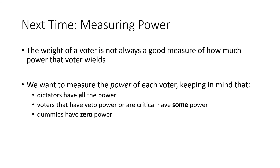As we've seen, the actual number of votes a voter has isn't always the best measure of how much power that voter wields — whether they're a dictator or a dummy. It's more complicated than just looking at the biggest or smallest number. What we really want to do is measure the actual power each voter has, so that a dictator has all the power, a dummy voter has zero power, and voters with veto power or critical roles have some intermediate power — a fraction between 0% and 100% indicating relative power level. That's what we'll be doing in the next section.